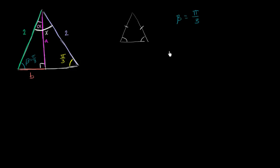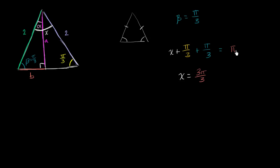Thinking in radians: x plus pi over three plus pi over three equals pi, since those are the interior angles of the larger triangle summing to pi radians (180 degrees). So x equals pi minus pi over three minus pi over three, which is three pi over three minus pi over three minus pi over three, giving us pi over three. So this angle also has measure pi over three radians.